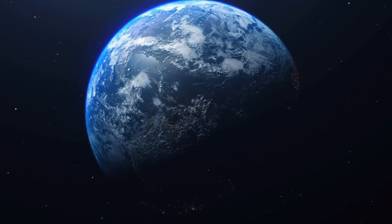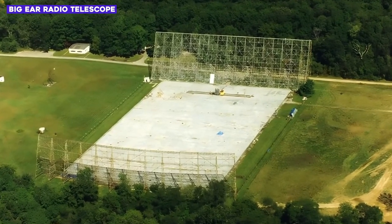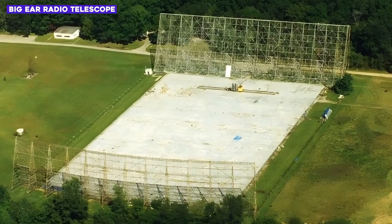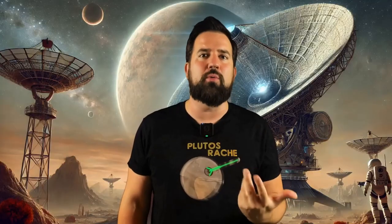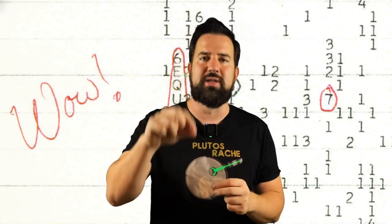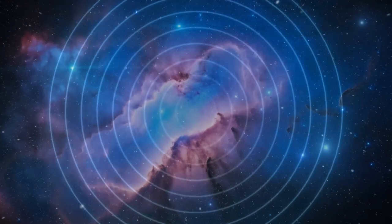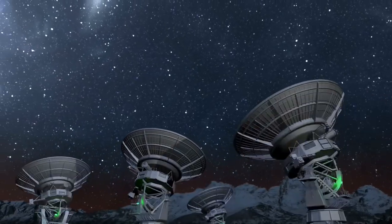August 15th, 1977 is a special date in astronomy. On this day, the Big Ear radio telescope at Ohio State University received a signal that still occupies the scientific community today. The astronomer Jerry Eamon was so impressed by the received signal that he wrote WOW at the edge of the computer printout. The birth of the famous Wow! signal.